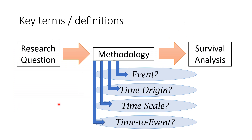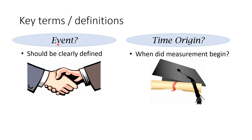Now the next step involves defining some key terms and definitions. With a research question in mind, we need to define the methodological features necessary to run a survival analysis. Those features include the event, the time origin, time scale, and time to event. The event needs to be clearly defined — in my example, my event is the graduate landing a job as a teacher, and whether that happens yes or no.